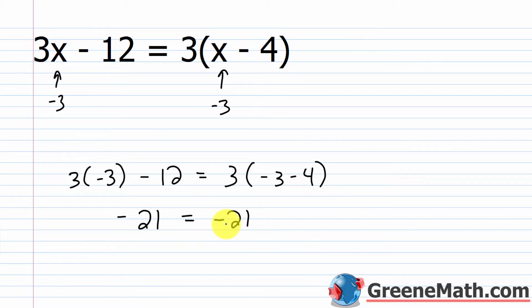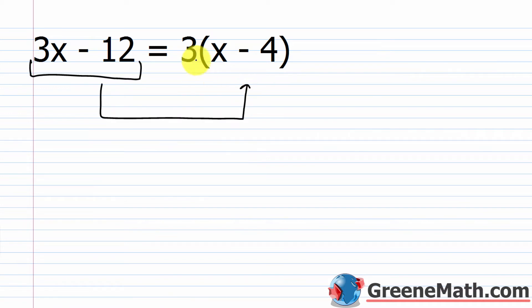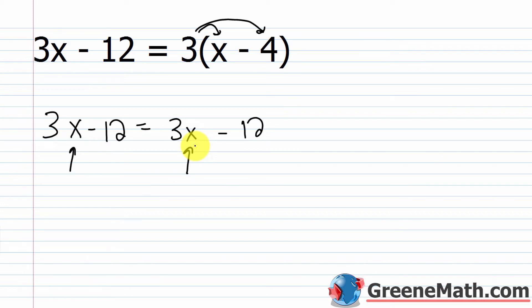How can that always be the case? The trick to this identity is that the left and right sides are the exact same thing — just in different forms. The left side is simply a simplified version of the right side. If I use the distributive property on the right side, 3 times x is 3x and minus 3 times 4 is 12, giving 3x minus 12 — the exact same thing on both sides. Whatever I plug in, I'm doing the exact same thing to it, so the left and right will always be equal.